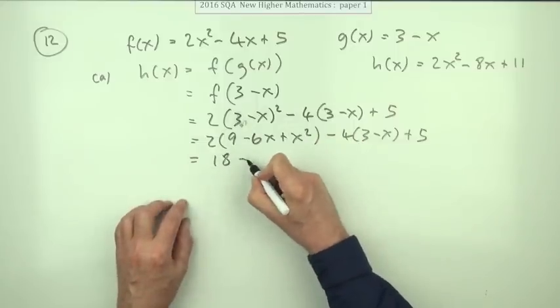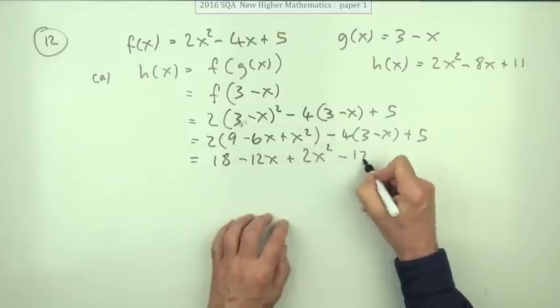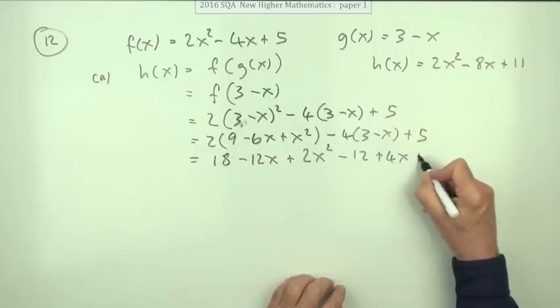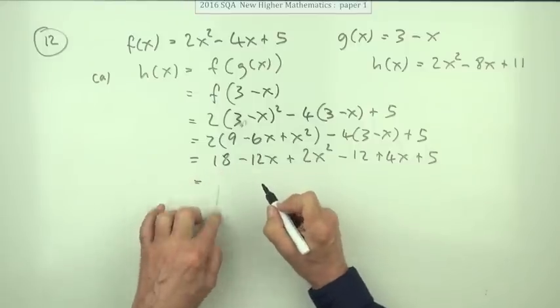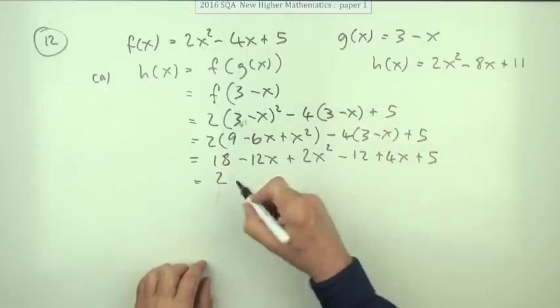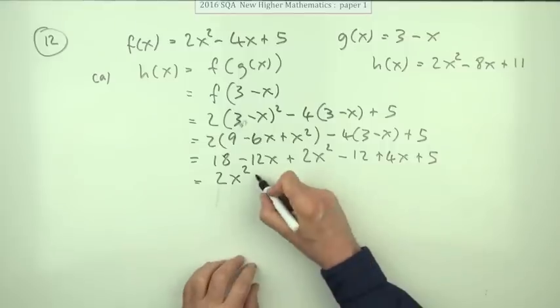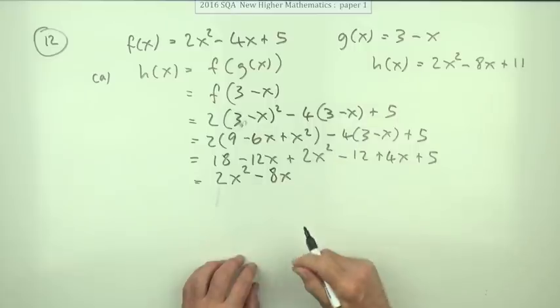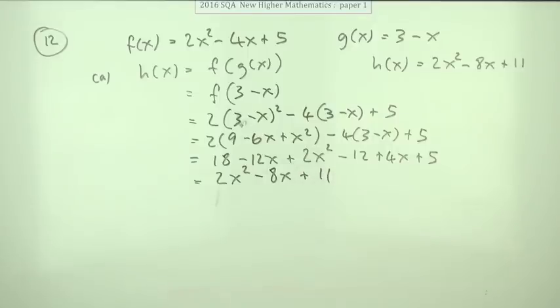So that's 18 minus 12x plus 2x squared minus 12 plus 4x plus 5. Rearrange it into a well-known phrase or saying, i.e., that one: 2x squared minus 12 plus 4 minus 8—looking good so far. Last part: 18 take away 12 is 6, plus 5 is 11. There you go.